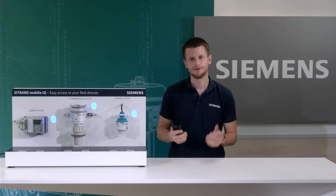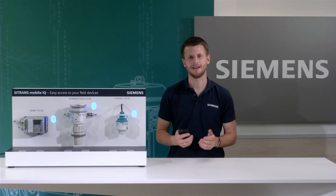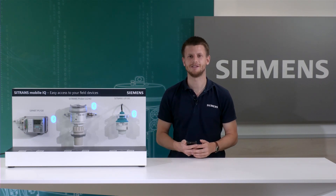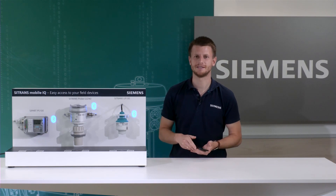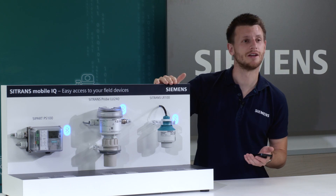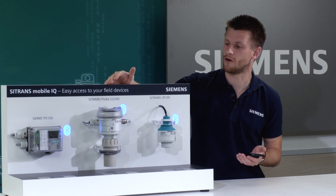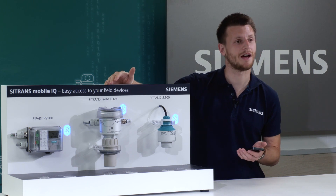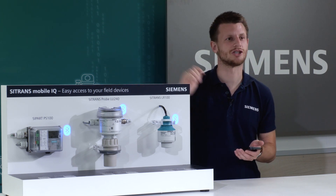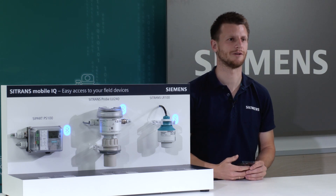In this video, I give you an overview about the SITRANS MobileIQ app and I show you how to operate Siemens field devices with it. For this purpose, we have placed three devices here: the level meter SITRANS LR100, the level meter SITRANS PROBE LU240 with mounted Bluetooth adapter AW050, and the valve positioner SIPART PS100, also with a retrofittable Bluetooth adapter.